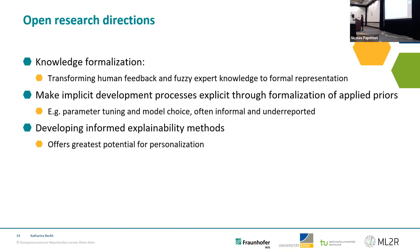The second direction is to make the implicit development process more formalized — for example, decisions about parameter tuning or model choice are sometimes mentioned only briefly, and making these more explicit in papers would have benefits. The third direction concerns informed explainability: we have real potential for personalizing explanations by utilizing prior knowledge that is available, keeping in mind that this information can be used to improve the explainability components.